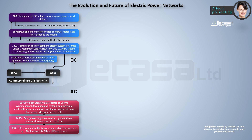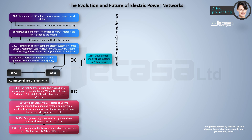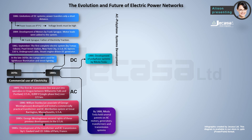In 1889, the first AC transmission line was put into operation in Oregon, between Willamette Falls and Portland, USA — a 4,000-volt single-phase line over 221 kilometers. In 1886, development of polyphase systems was begun by Nikola Tesla.